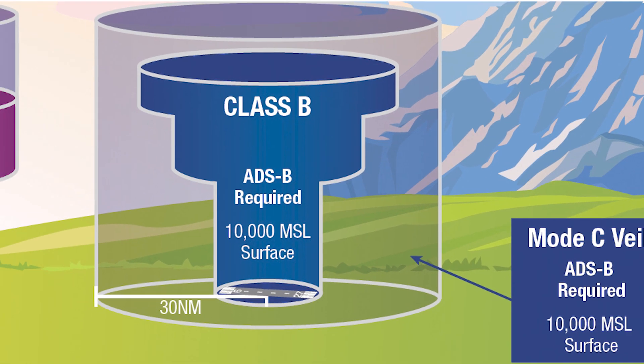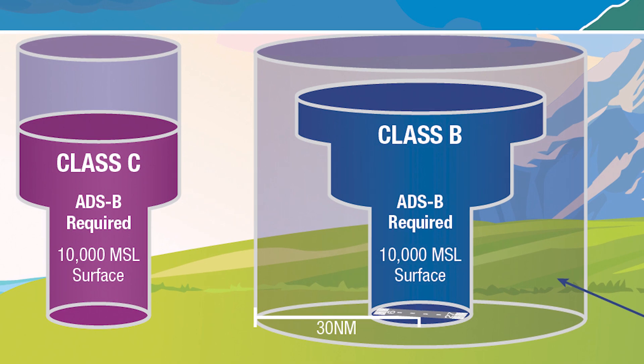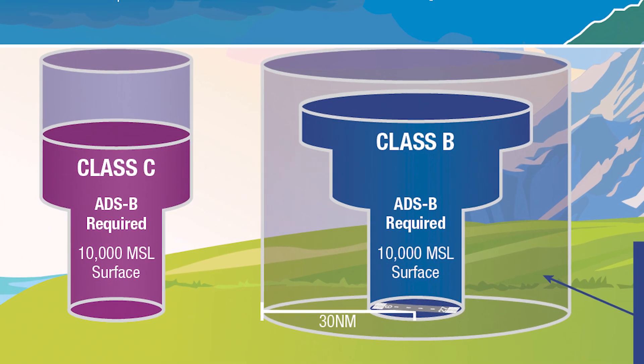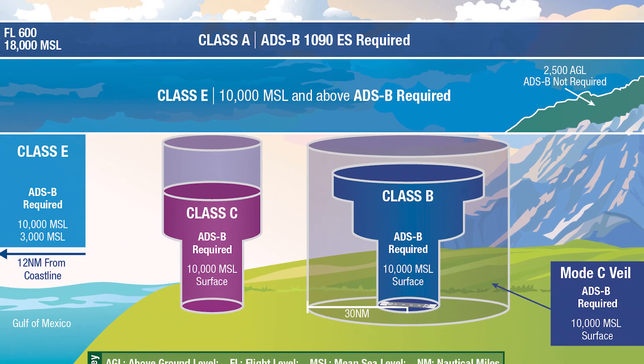And here's a gotcha: you cannot fly over Class C or B without ADS-B out.